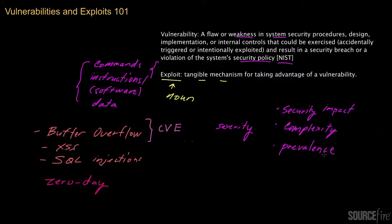These types of criteria used to analyze and reason about the severity of a vulnerability are formalized in a scoring system known as CVSS, which stands for the Common Vulnerability Scoring System. It's basically a system used to come up with a metric that reflects the underlying severity of a vulnerability.